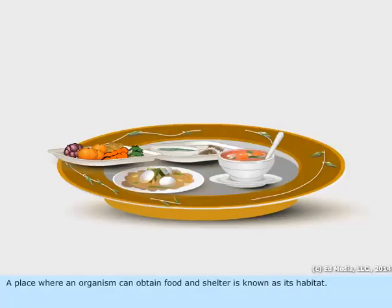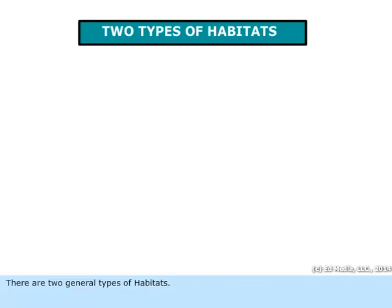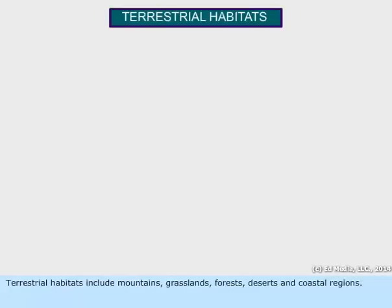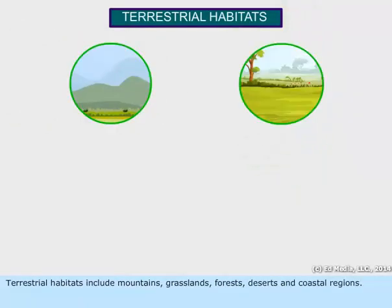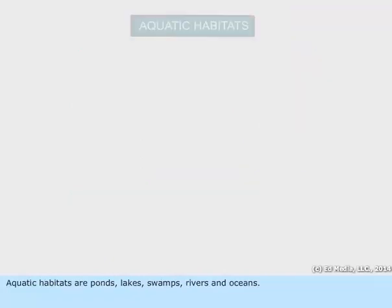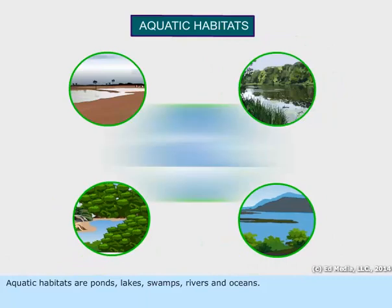A place where an organism can obtain food and shelter is known as its habitat. There are two general types of habitats: terrestrial habitats and aquatic habitats. Terrestrial habitats include mountains, grasslands, forests, deserts, and coastal regions. Aquatic habitats include ponds, lakes, swamps, rivers, and oceans.